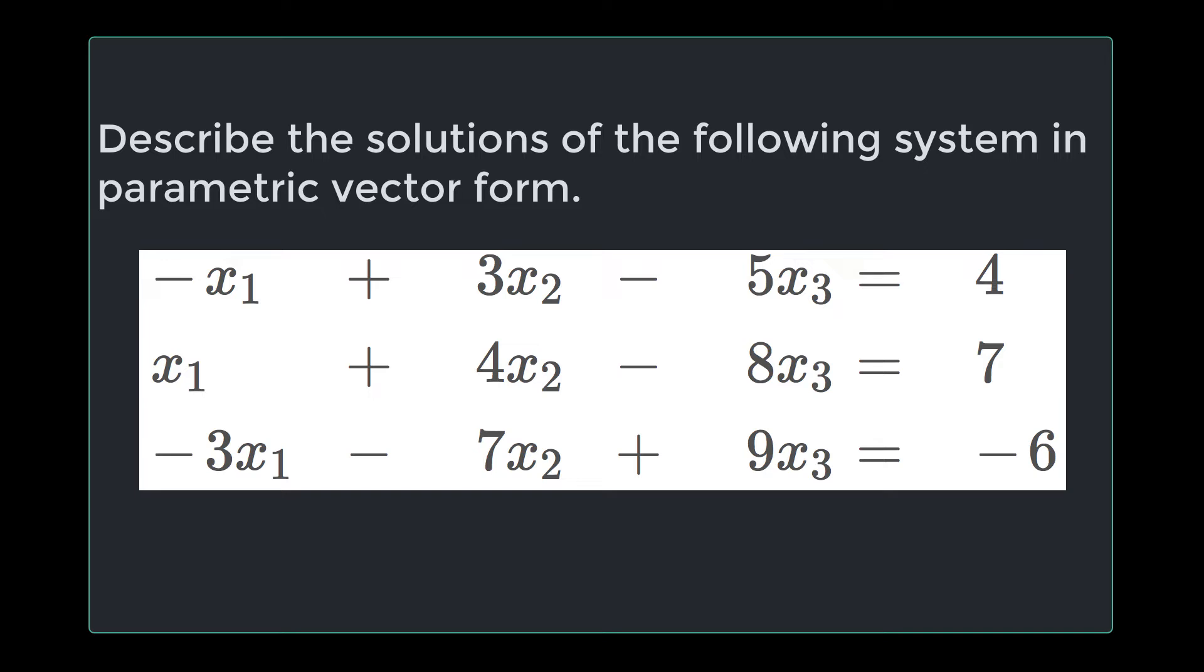And the system is: minus x1 plus 3x2 minus 5x3 equals 4, x1 plus 4x2 minus 8x3 equals 7, and minus 3x1 minus 7x2 plus 9x3 equals negative 6.